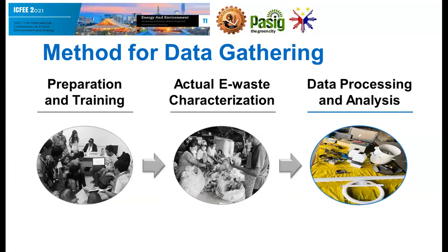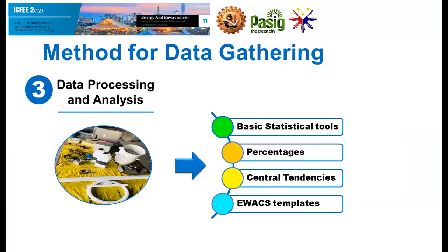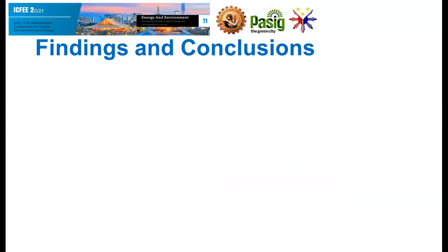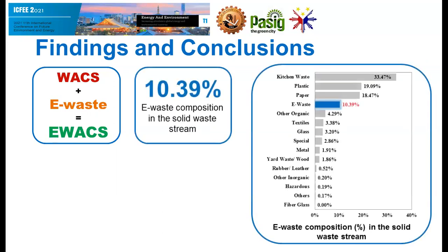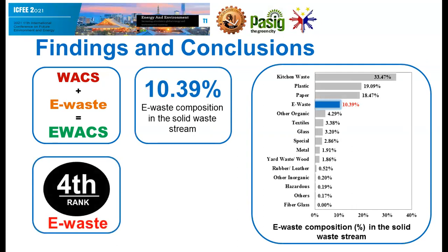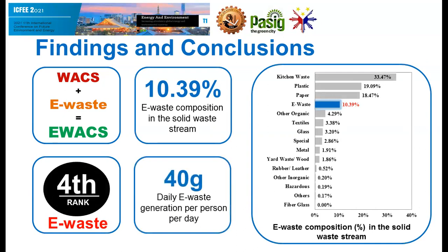The third stage is data processing and analysis. After completing the field activity, analysis and interpretation of the raw waste characterization data was performed. Key findings include: the WACS approach does not have any procedure for categorizing e-waste, which the research addressed by incorporating e-waste into the WACS process — known as e-WACS, or the Electronic Waste Analysis and Characterization Study. From the 261.44 kilograms average daily solid waste, 1.65 kilograms, or 10.39%, comprises e-waste, ranking fourth among other waste categories. Overall daily waste generation per person is 350 grams, and e-waste generation amounts to 40 grams per person.